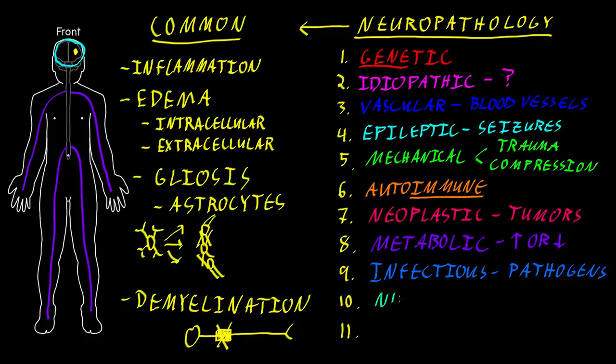The next category I call nutritional. This involves a deficiency of something in the diet. Some component of the diet is inadequate, leading to dysfunction of neural tissues. A common example is a polyneuropathy that can occur if a person doesn't get enough vitamin B12.